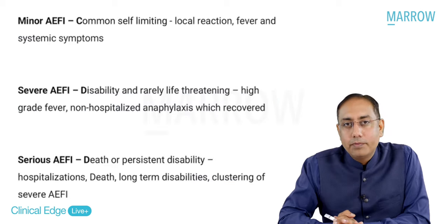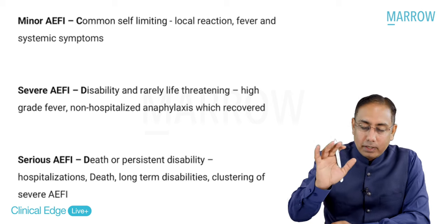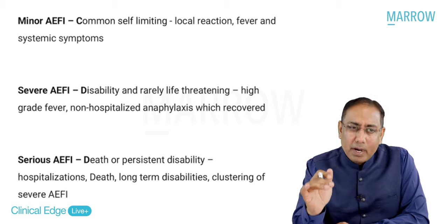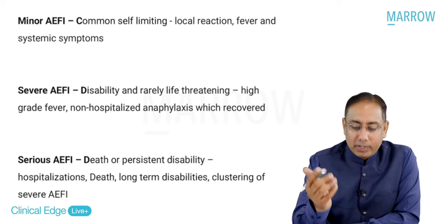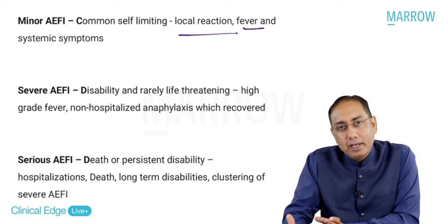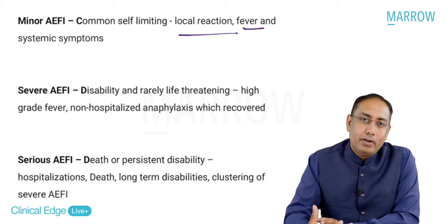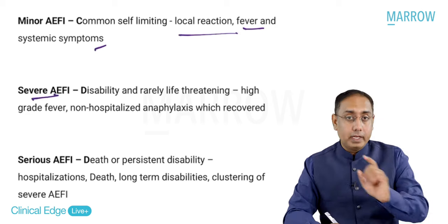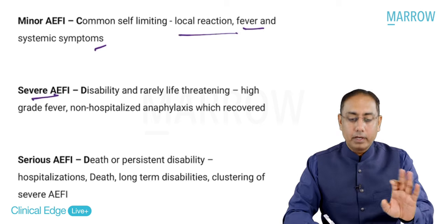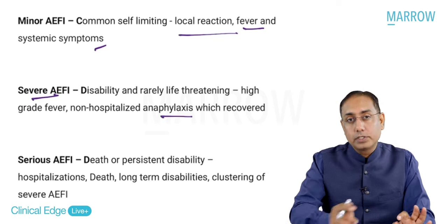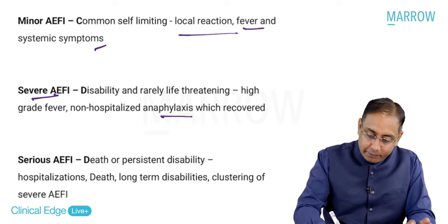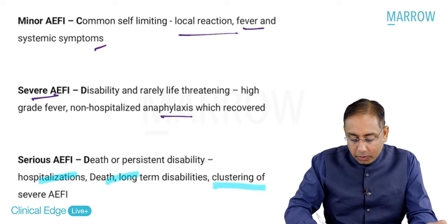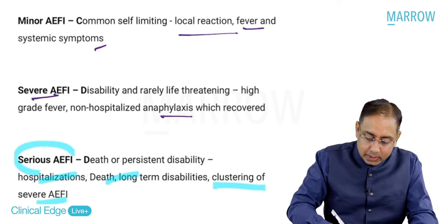Seriousness occurs with quality-related or immunization errors. Adverse events can be graded as mild, severe, and serious. Mild AEFI is generally self-limiting with minor fever or local pain and mild systemic symptoms. Severe AEFI involves high-grade fever or anaphylaxis not needing hospitalization. Whenever there is hospitalization, death, or a lot of clustering of AEFI cases, that is called a serious AEFI.